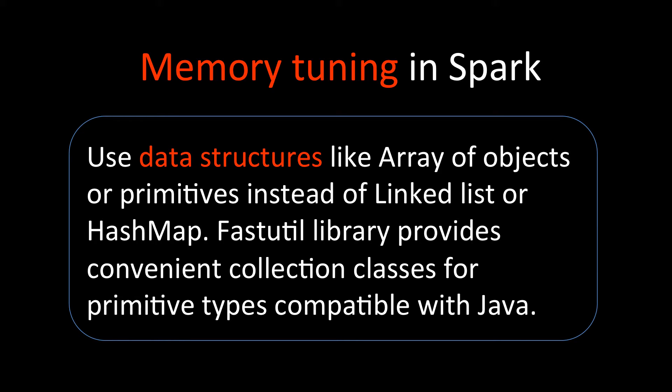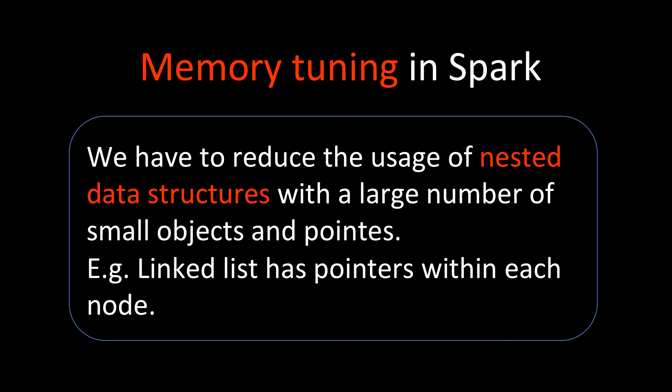The first tuning practice is to use data structures like arrays of objects or primitives instead of linked lists or hash maps. Linked lists and hash maps use extra memory, whereas arrays of objects or primitives use less memory. There is a FastUtil library in Spark that can be used for convenient collection classes for primitive types that are compatible with Java.